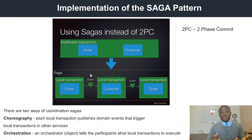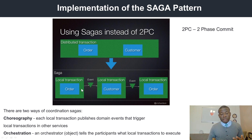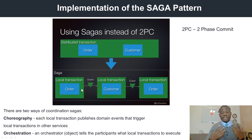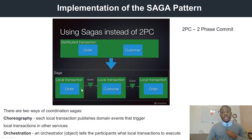Just an overview of what a Saga is: a Saga is simply a transaction that is distributed across different services. For instance, in this diagram we have two services each having two different databases. A Saga starts when an order is placed in the order service, triggering an event. This event is picked up by the customer service, which verifies that the customer is able to place the order and then sends back an event to the order service, which now completes the order.